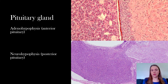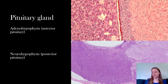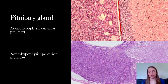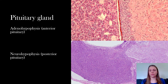The neurohypophysis on the right is actually made up of neural tissue and does not produce the hormones that it releases. The neurohypophysis is going to look more stringy, and the adenohypophysis is going to look like cuboidal cells.